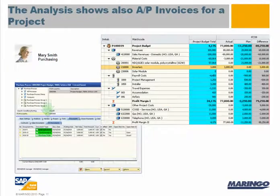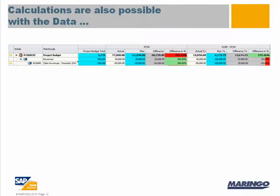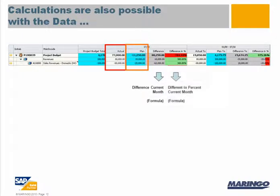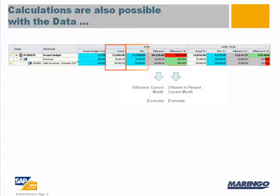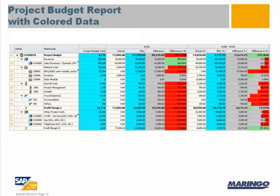The costs that occur when purchasing project materials are integrated into the analysis as well. Project management based on SAP Business One supports even calculations with freely definable fields, lines and columns. This enables you to compare per month the actual and planned revenues and to determine the total difference or the difference in percent, allowing you to define complex calculations like the one for a project budget report.